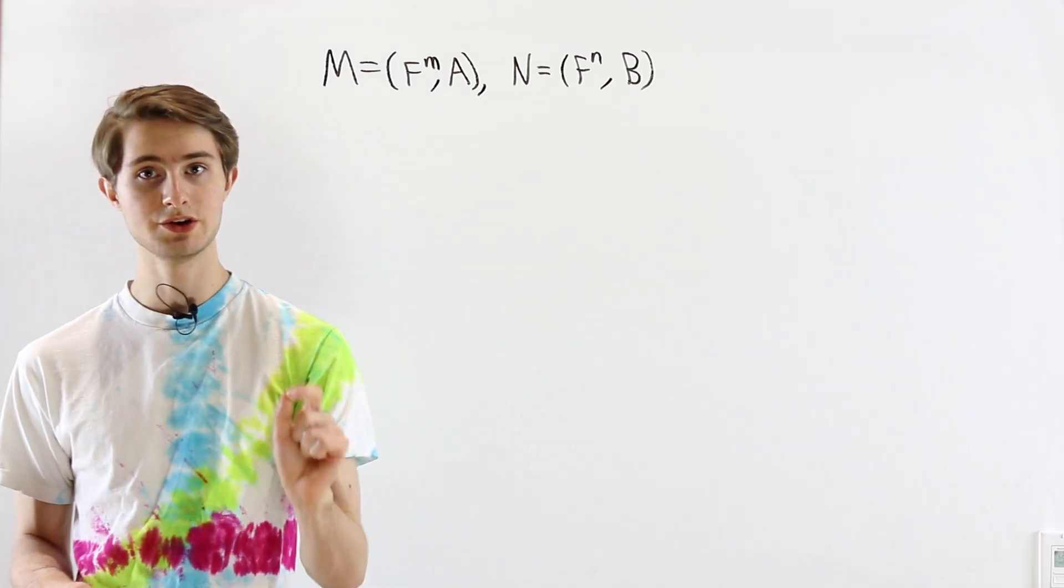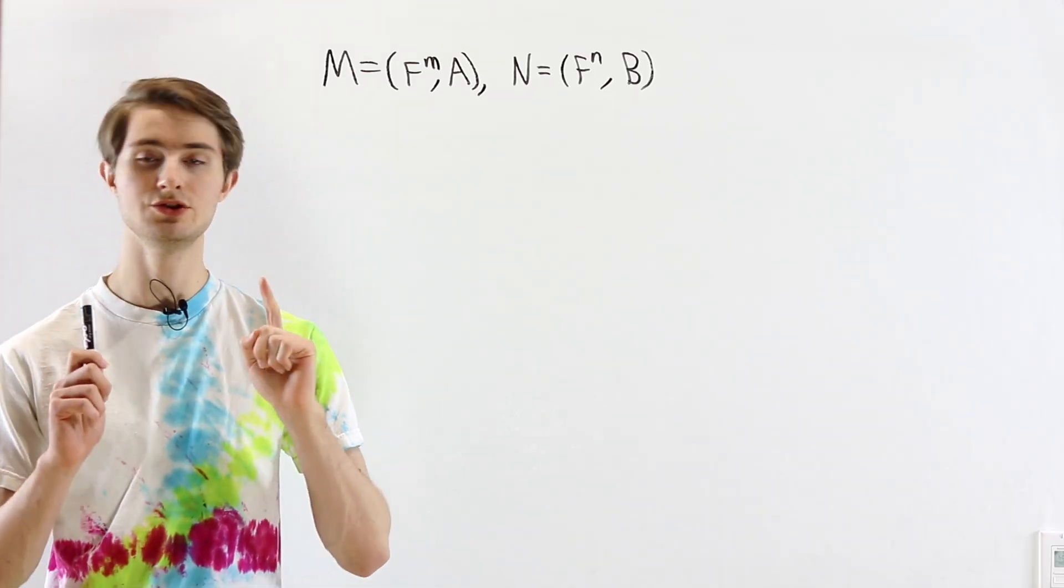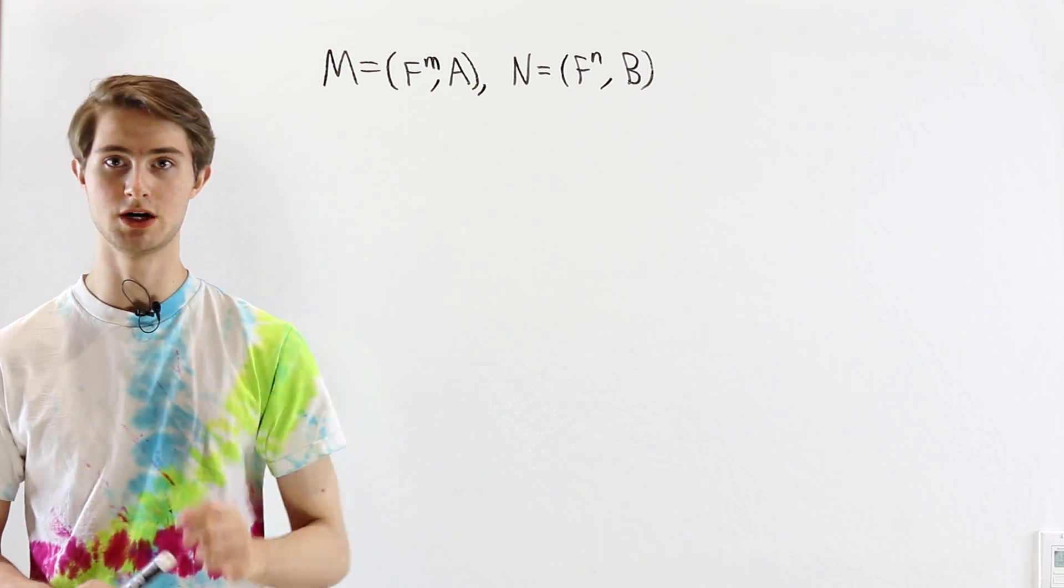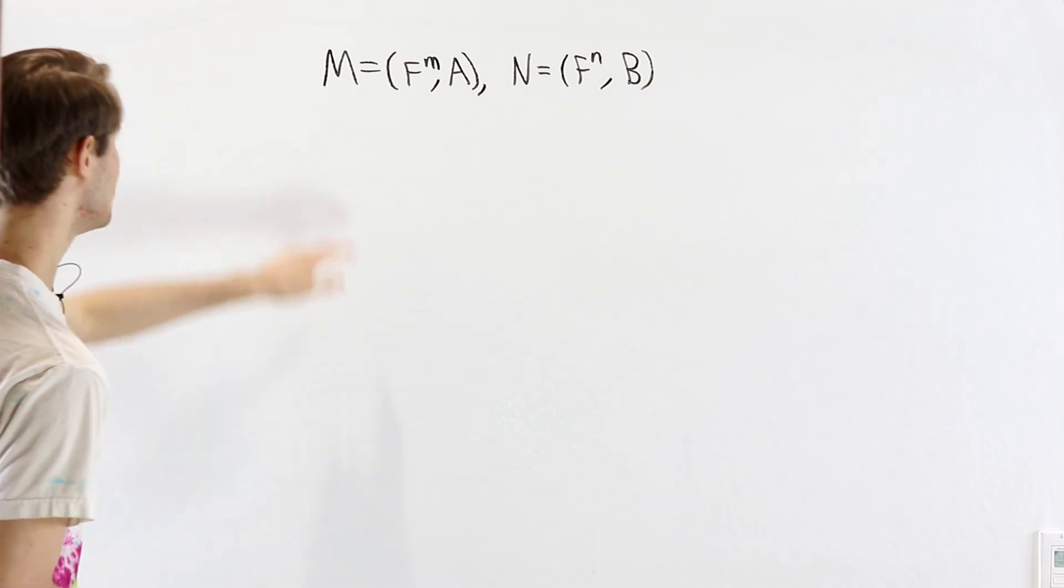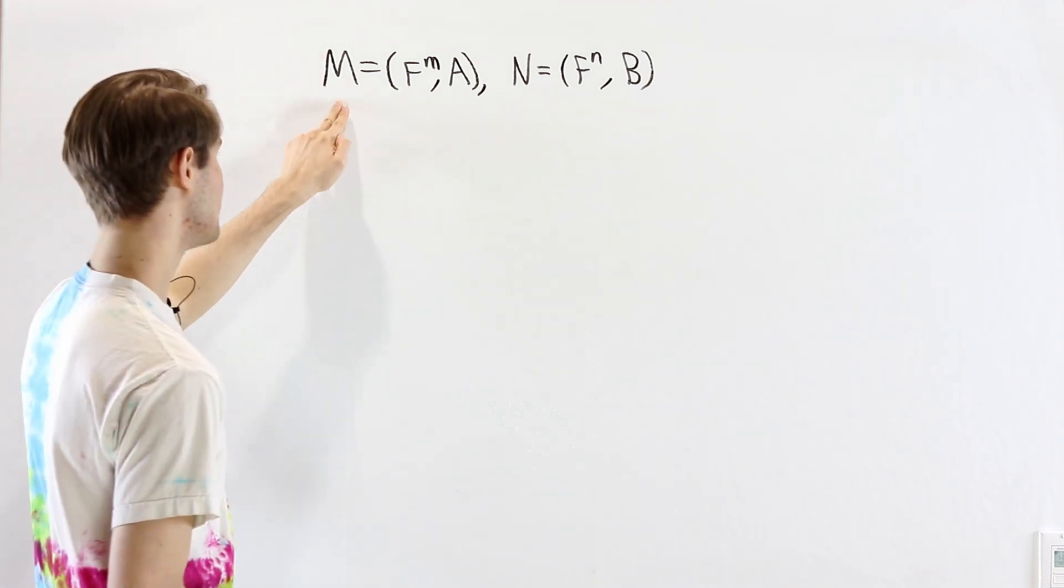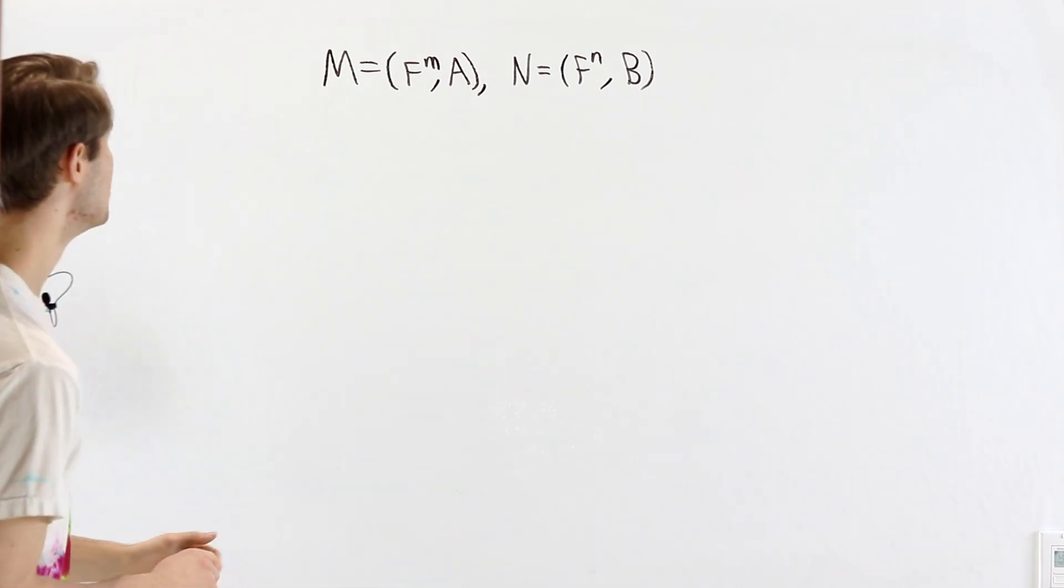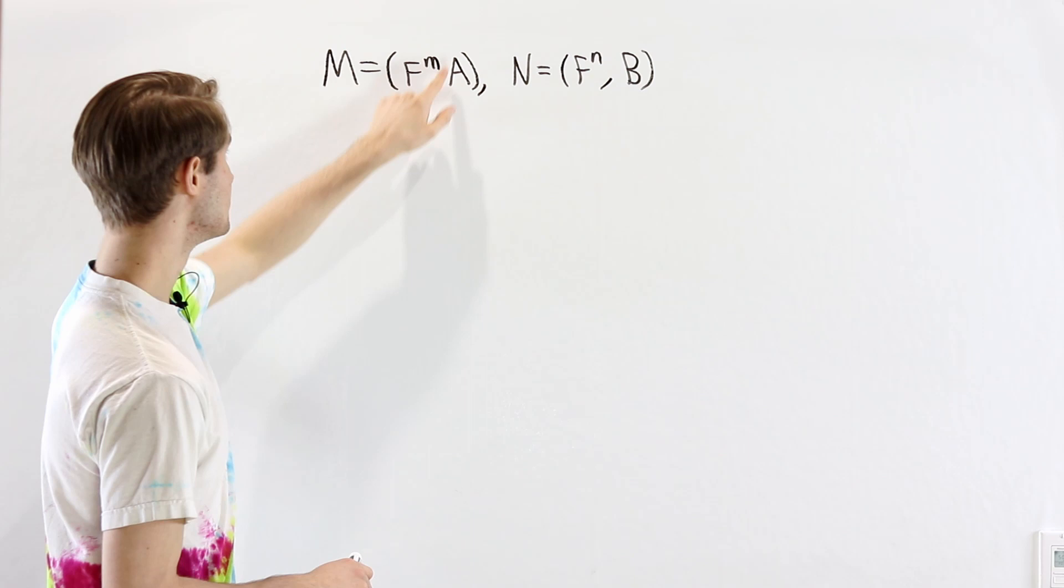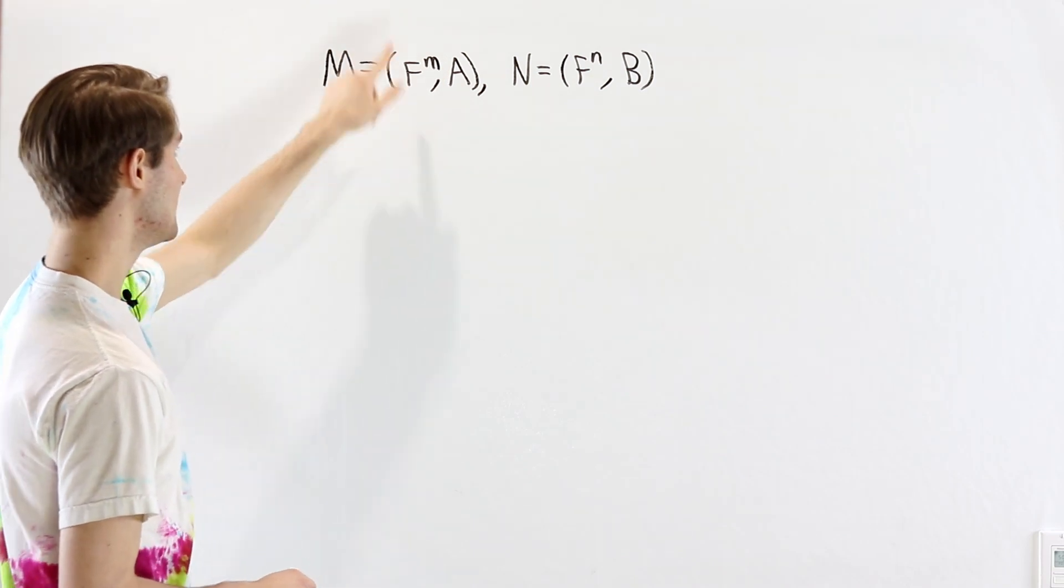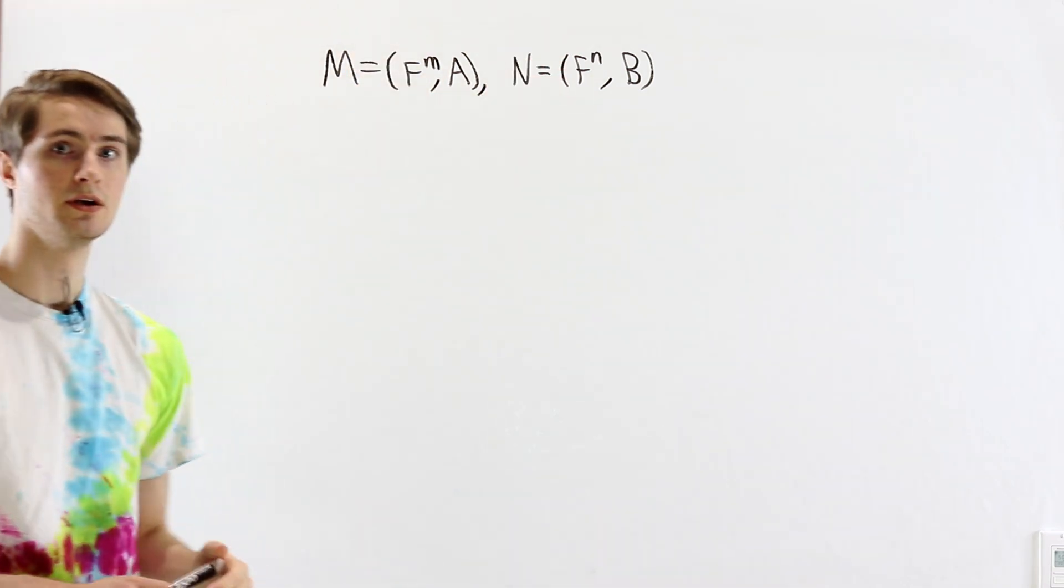We are going to prove that similar matrices correspond to isomorphic F[x]-modules. Let's suppose we have two F[x]-modules M and N that are both finitely generated. We know that they're both described as vector spaces F to the m and F to the n.